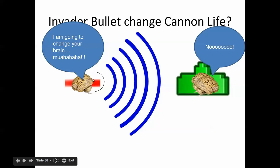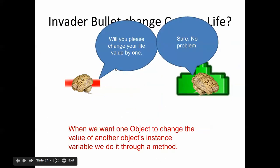We don't allow one object to change instance variables of another object because in other applications, that could cause big security breaches and stuff like that. For us, it's just something we don't do. So instead, the bullet says, hey, will you change your life value by one or whatever his damage variable is? So will you lower your life by one? Sure, no problem.